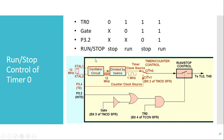Next is the run/stop control of Timer 0. This circuit helps start or stop the timer. The upper part decides whether it acts as a timer or counter, while the lower part decides whether the timer starts or stops counting. A table shows different conditions — the first involves the TR0 bit, which starts or stops the timer.